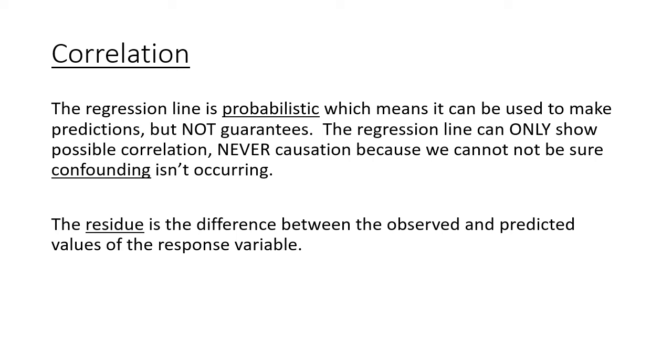Just like we can only show correlation but never causation, we can't really be sure that confounding isn't occurring. When I drew that line, not every point was on that line. How far off is our prediction from what actually happened? That's what's called the residual. The residual is basically how far off from our prediction are we.